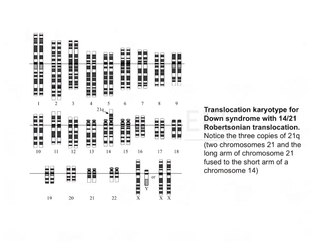The second type is translocation. In this, instead of an extra full copy of chromosome number 21, there is an additional part of chromosome number 21 — such as the 21Q or the long arm of chromosome 21 — which is not present as a standalone set but is attached to another chromosome, usually chromosome number 14. This accounts for 4% to 5% of all cases of Down syndrome.